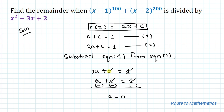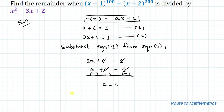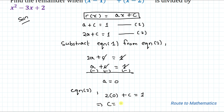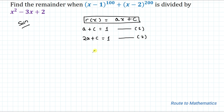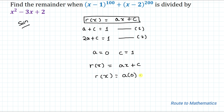Now putting the value of a into equation 2: 2 times 0 plus c equals 1, which gives c equals 1. So a equals 0 and c equals 1. We are asked to find the remainder, which is r(x) equals ax plus c. Therefore r(x) equals 0 times x plus 1, so our remainder is simply 1. That is the answer.